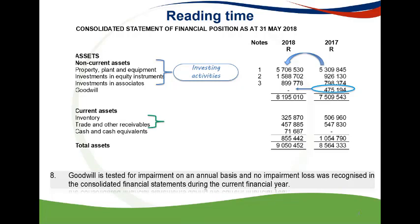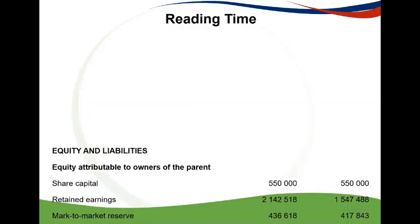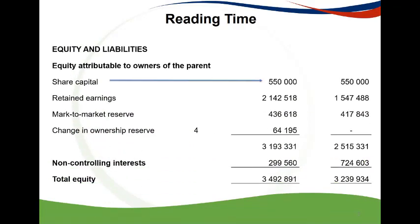Inventory and trade receivables are working capital and are usually classified as operating activities since they relate to the main revenue producing activity of Reshuffle Limited. The manner in which they are disclosed will depend on whether the required asked for the direct or indirect method. The movement in share capital equity should be disclosed as financing activities in terms of IAS 7, paragraph 17; however, in this scenario, there was no movement in this regard.